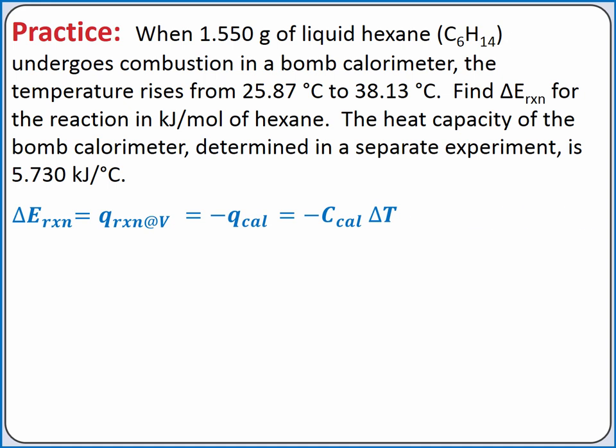We can substitute in final temperature minus initial temperature for delta T. So to calculate the change in internal energy for the reaction, it's negative heat capacity of the calorimeter times the final temperature minus the initial temperature.